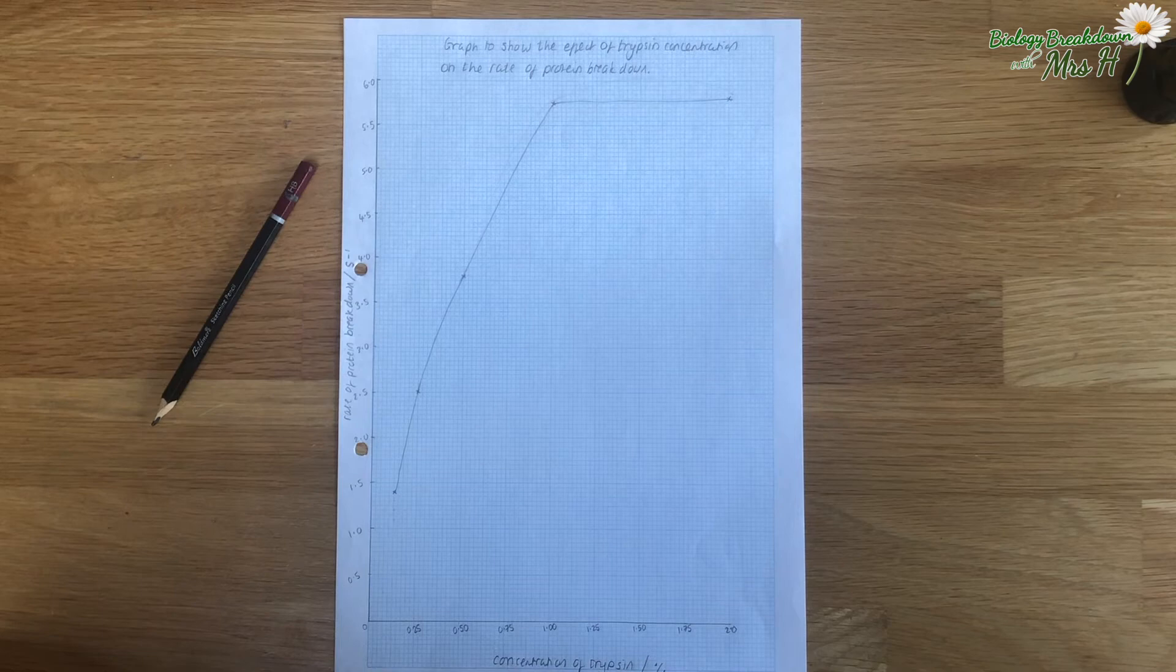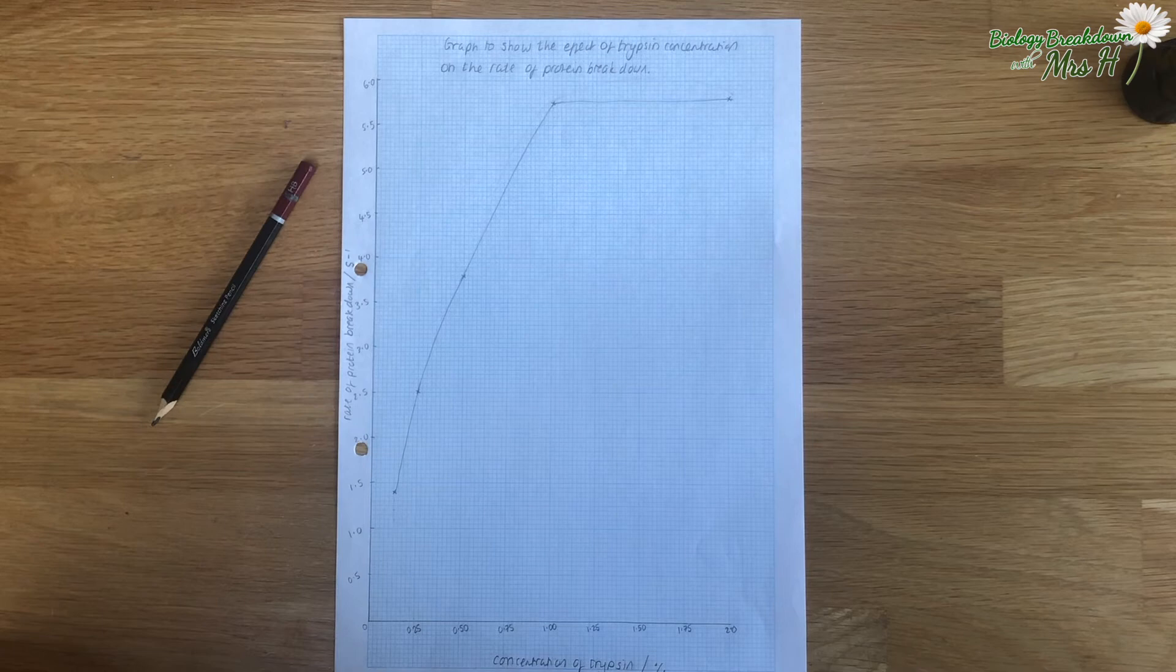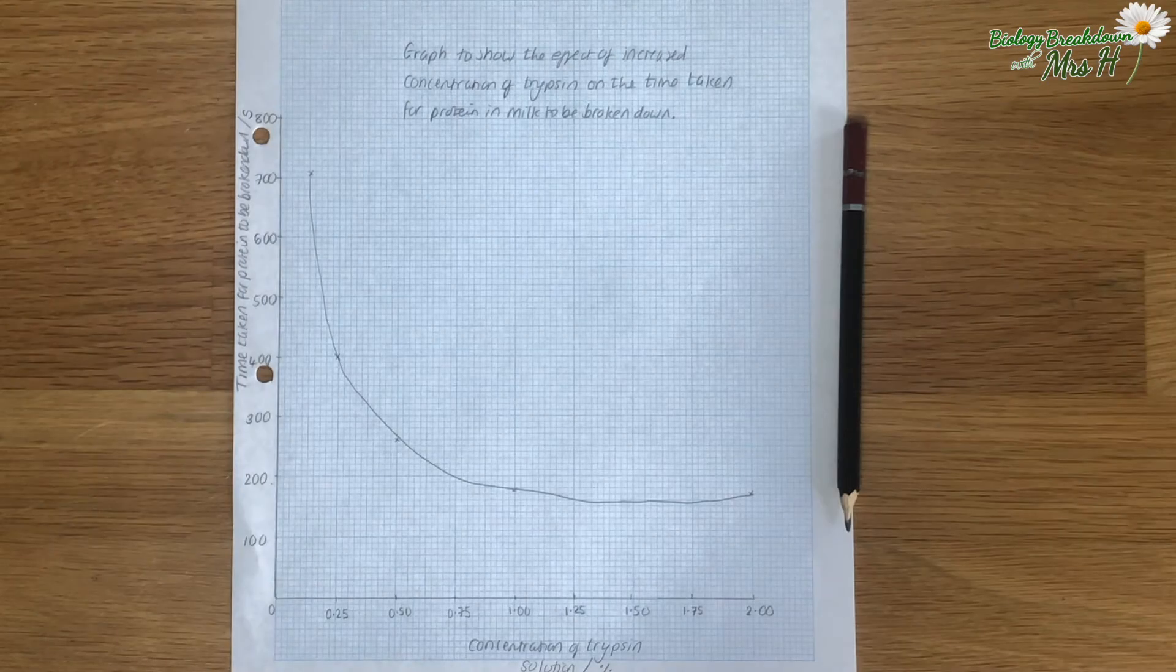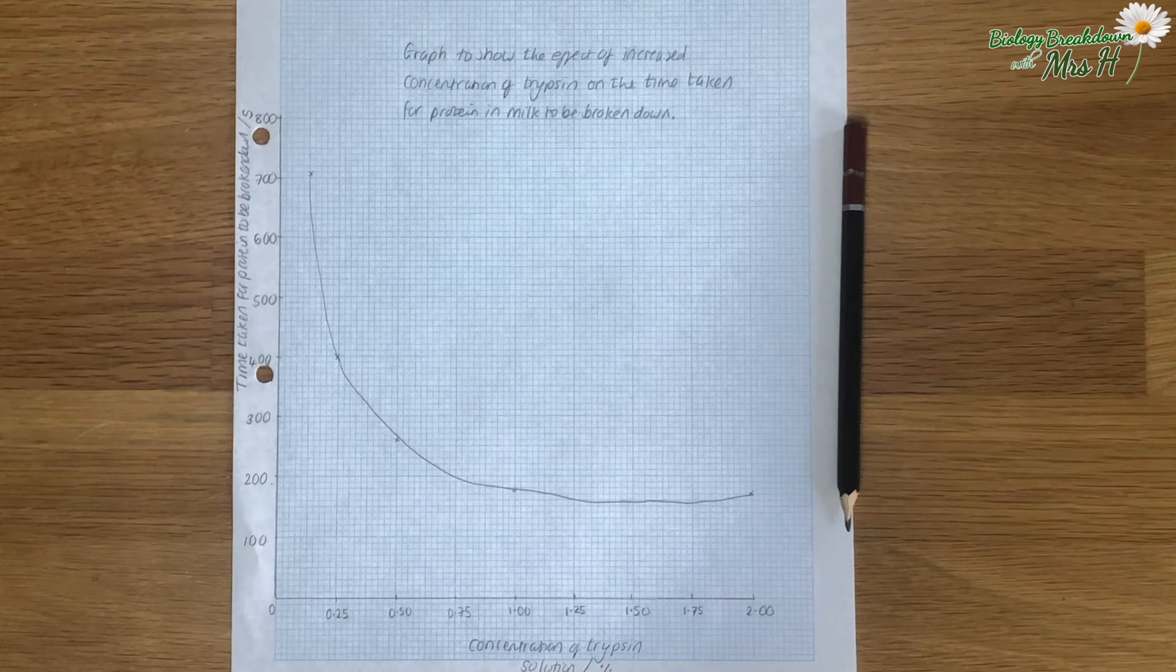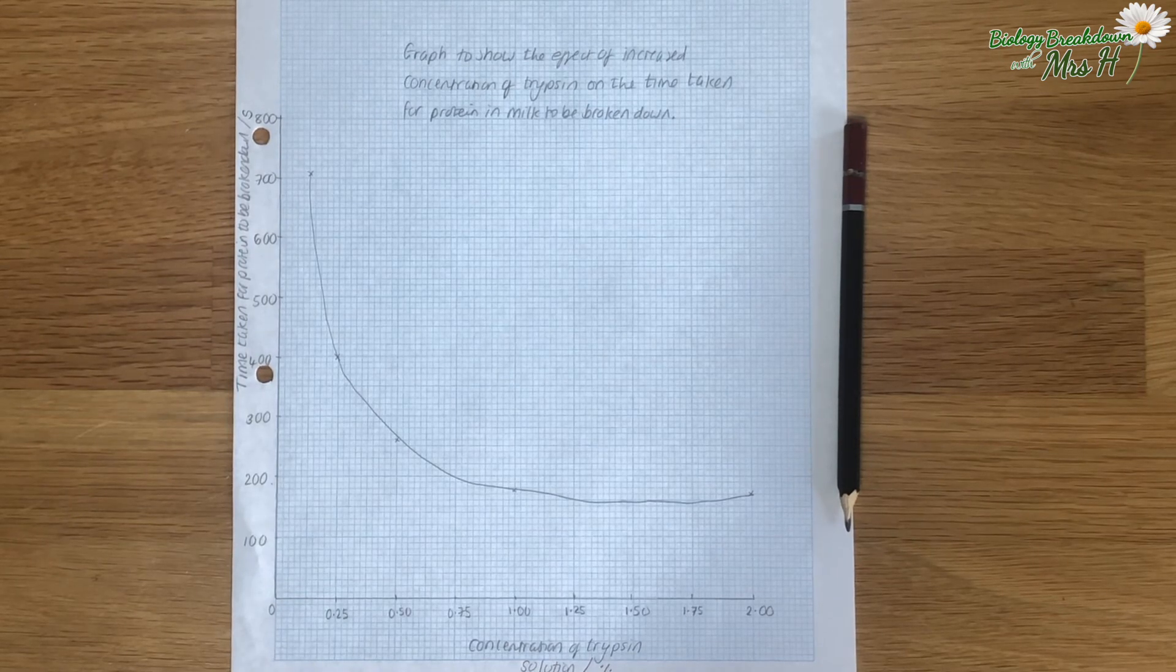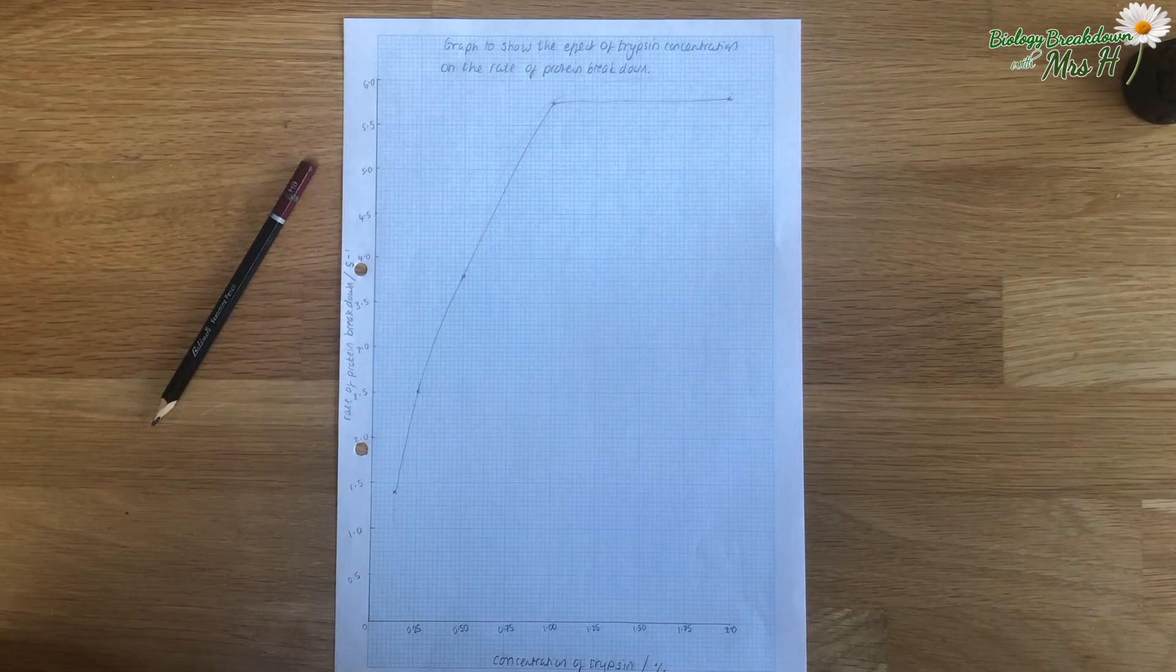If we were asked to improve the accuracy of our curves of best fit the best thing we can do is use concentrations in between the concentrations we've actually used and that way we can get more points plotted on the curve.